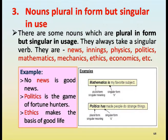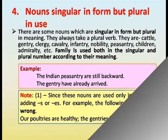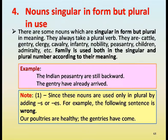Nouns plural in form but singular in use. Some nouns are plural in form but singular in usage and always take a singular verb. They are: news, innings, physics, politics, mathematics, mechanics, ethics, economics, etc. Examples: No news is good news. Politics is the game of fortune hunters. Ethics makes the basis of good life.